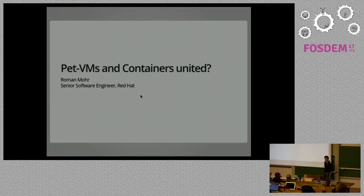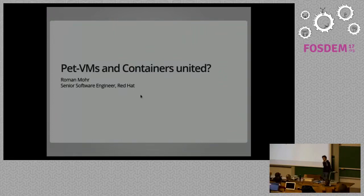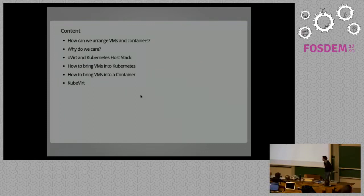For those who do not know what pet VMs are: pet VMs are basically the opposite of cloud VMs. Whenever you have an application inside a VM and you think a lot about how you can migrate it or keep it up without shutting down the RAM, you're talking about a pet VM. On the other hand, with containers or cloud VMs, you don't care that much about the state — it's more about spawning the VM again if it goes down.